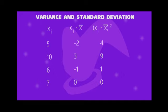Now, Xi minus X-bar, we have to find out. We get minus 2, 3, minus 1, and 0. And Xi minus X-bar in the entire squared lets you square all the numbers: 4, 9, 1, and 0.